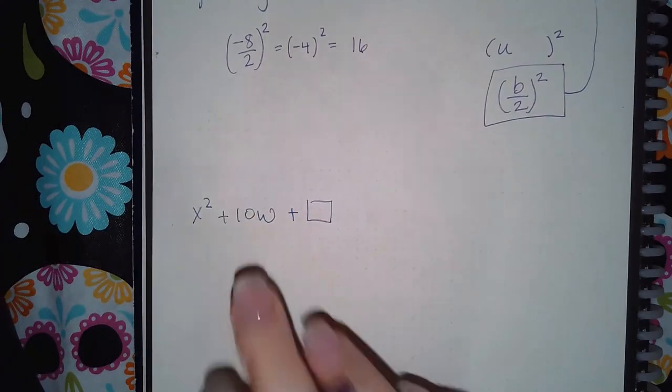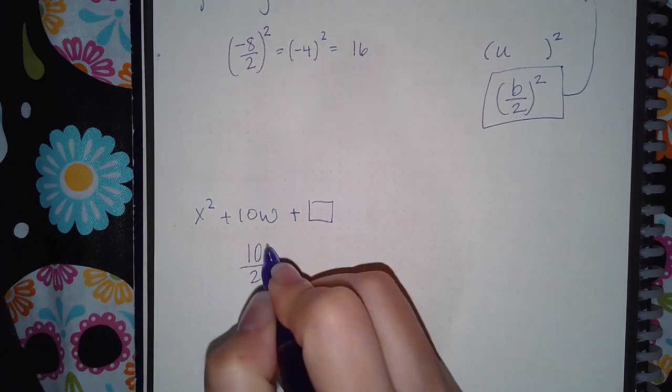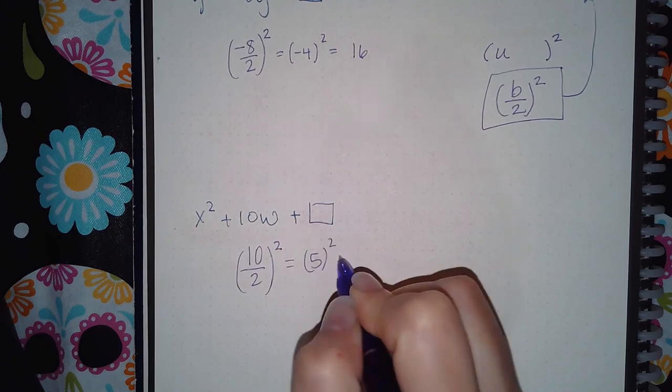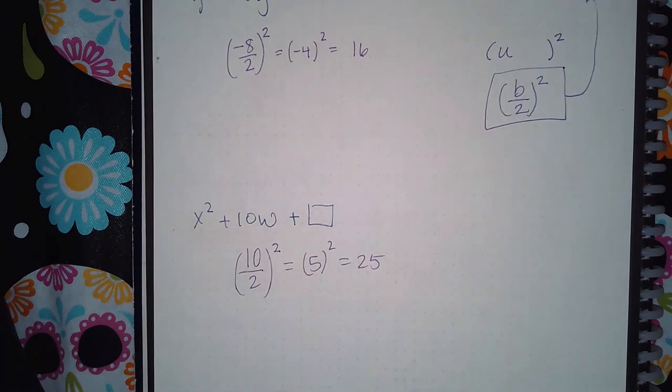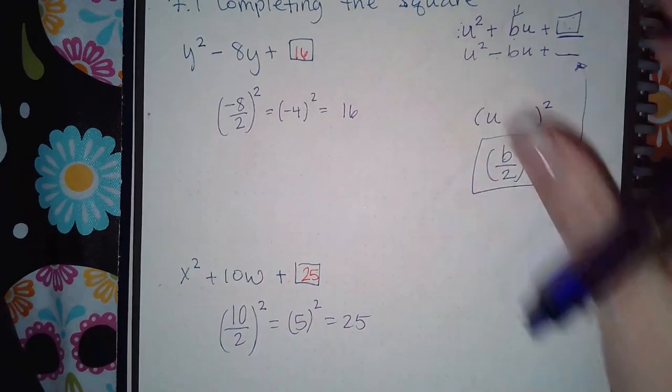Similarly, down here, the B value is positive. So I get positive 10 over 2, the whole thing squared, which is positive 5 squared, which is a positive 25. So 25 is the number I would be typing in in that answer.